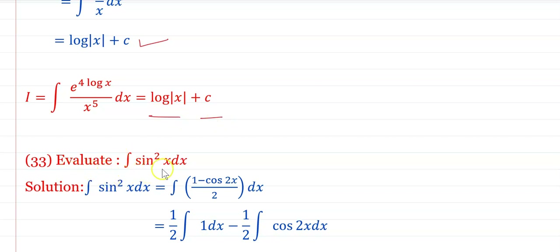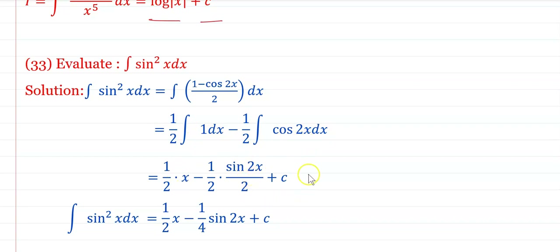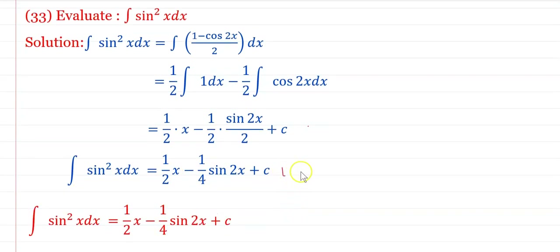Evaluate ∫sin²x dx. Using the formula sin²x = (1 − cos 2x)/2: ∫(1 − cos 2x)/2 dx = (1/2)[∫1 dx − ∫cos 2x dx] = (1/2)[x − sin(2x)/2] + C = x/2 − (1/4)sin(2x) + C.